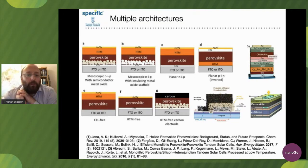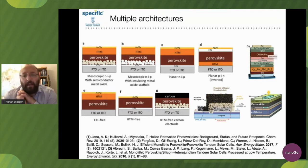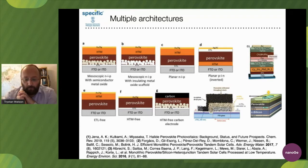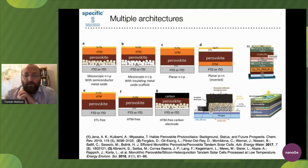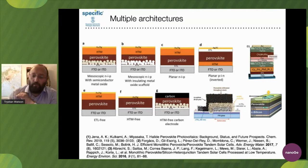This versatile material can work without a hole transporter, without an electron transporter, and without a gold top contact - using carbon instead. Then to the right we have a rather different architecture: the triple mesoscopic structure, which is fully printed without any evaporated contacts - we'll be hearing about that from Professor Han later. The final two are tandem devices, with exciting development ongoing in both perovskite-silicon and perovskite-perovskite tandems.